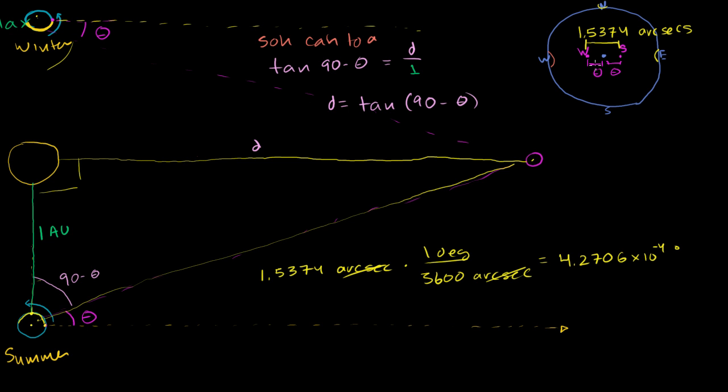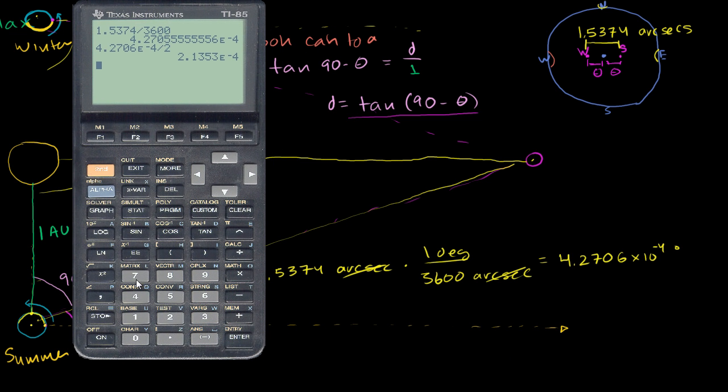This angle, or the shift from center, we could visualize it, is going to be 2.1353 times 10 to the negative 4. So now that we know that, we already figured out how to figure out the distance. We can just apply this right over here. So let's just take the tangent. Make sure your calculator is in degree mode. I've made sure of that before I started this video. Of 90 minus this angle right here. So instead of retyping, I'll just write the last answer. So 90 minus this angle. And we get this large number, 268,326.